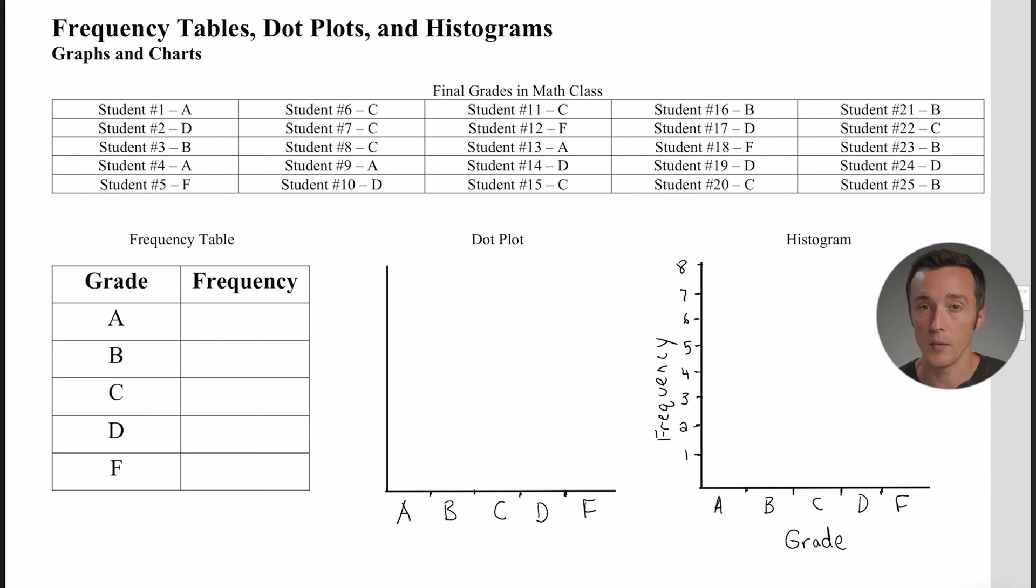The first way that you'll often find is what's called a frequency table. This literally just tells you how frequently or how often an event occurs. In other words, if they're asking us to fill out this frequency table that says of those 25 students, how many were A's...